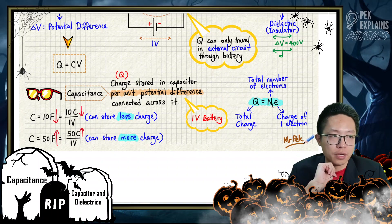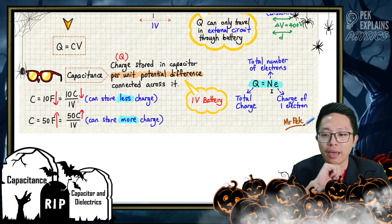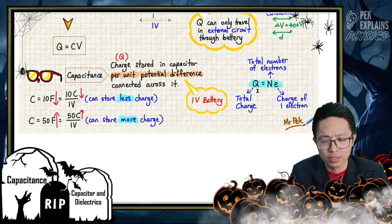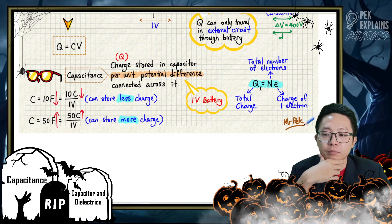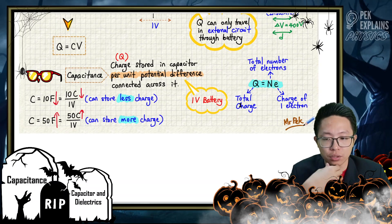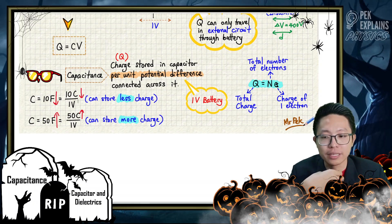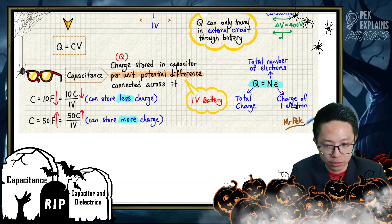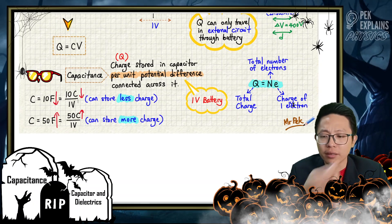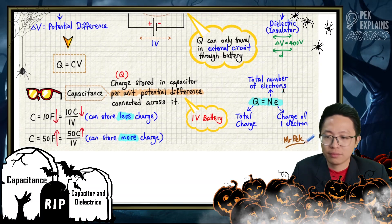Another important formula is Q equals Ne. Q is the total charge, N is the total number of electrons, and e is the charge of one electron. Why do we say charge refers to electrons? Because all this while when we charge a capacitor, it is only the electrons being extracted.